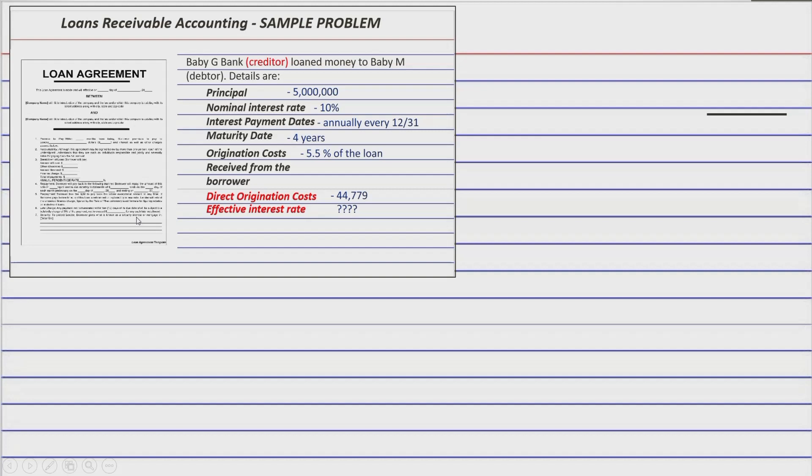I know that I said that you need to interpolate first so that you'll get the effective rate. Actually, that's true. But even without the effective rate, you can already make an initial entry. So that entry is debit loans receivable, and then credit cash.